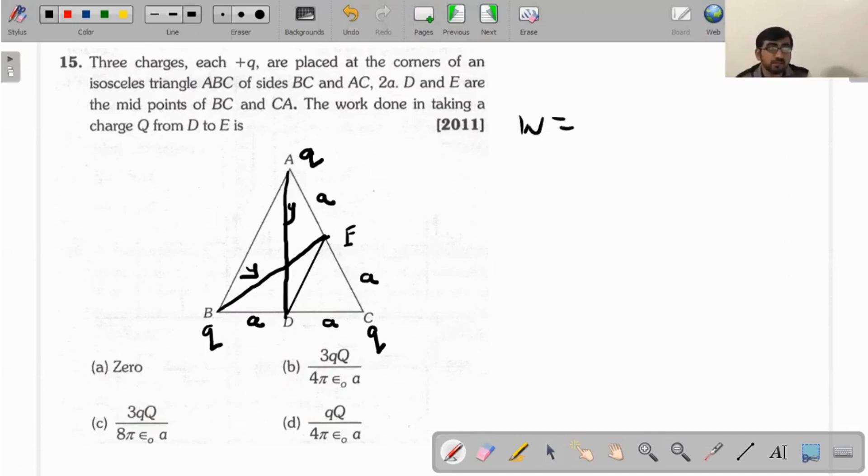So the work done is the charge that you are moving times potential final minus potential initial. Since the potentials are same, work done is zero.